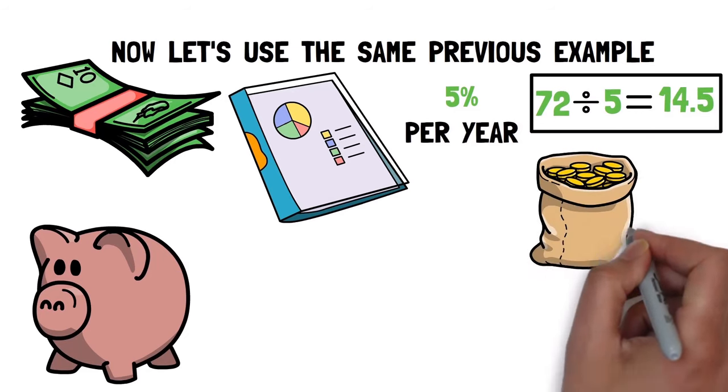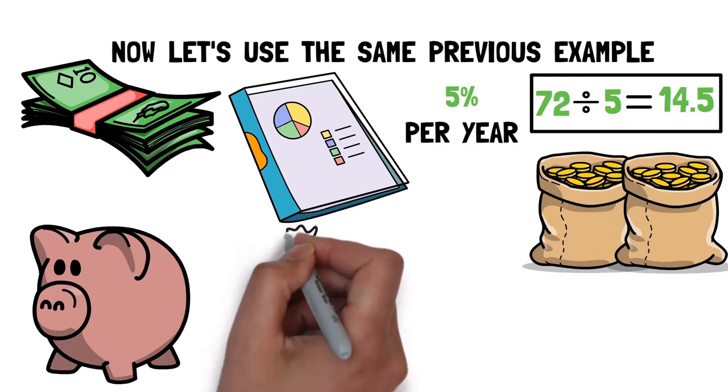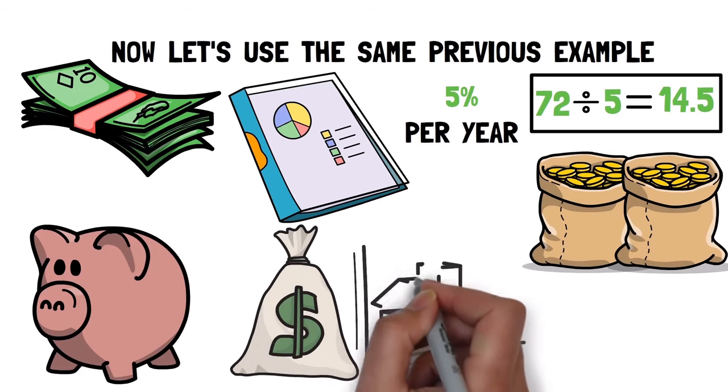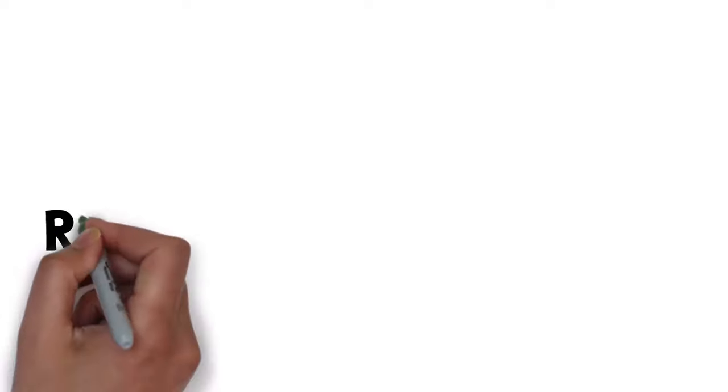So instead of 72 years, it will only take you 15 years to double your money, regardless of the amount you put in. And it's safe. 5% is just an example. Realistic rates can be higher.